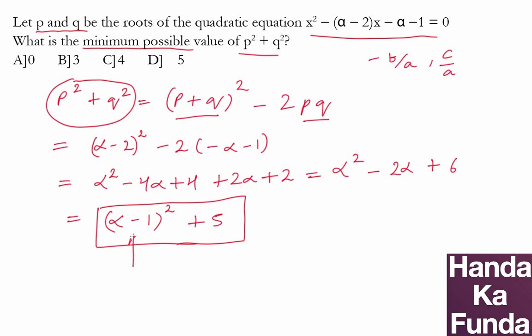Well, the perfect square portion has to be non-negative. The minimum that it can be is 0. So the overall minimum value of P square plus Q square will occur when alpha is equal to 1.